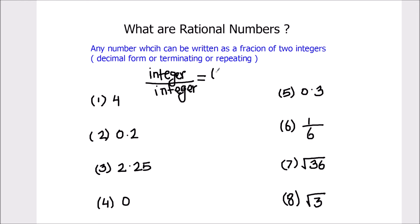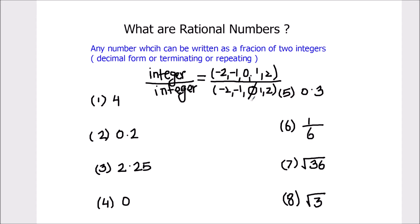An integer can be minus 2, minus 1, 0, 1, 2 — these are all integers. Integers are positive numbers as well as negative numbers. In the denominator it can be minus 2, minus 1, 1, or 2, but 0 is not allowed in the denominator. It will not be a rational number if there is a 0 in the denominator. So rational numbers are numbers having a non-zero number as the denominator.